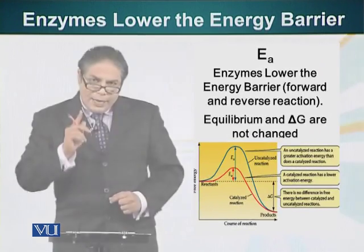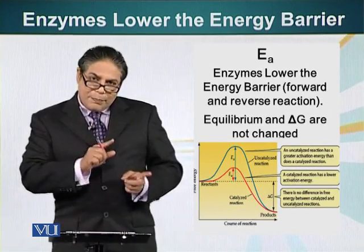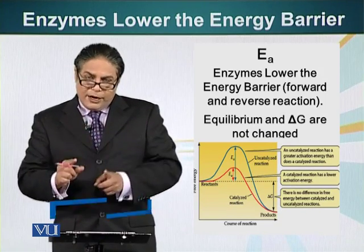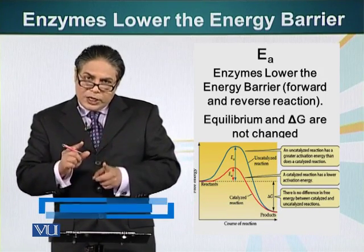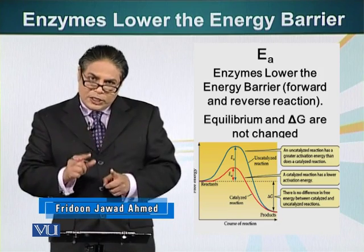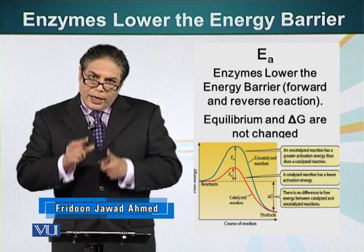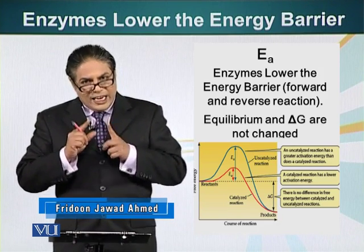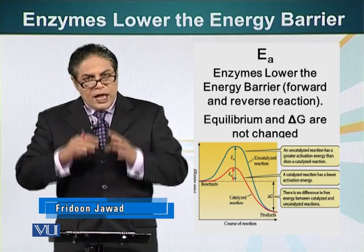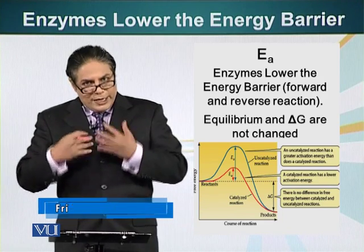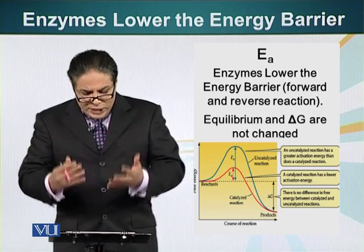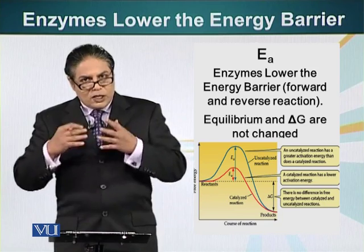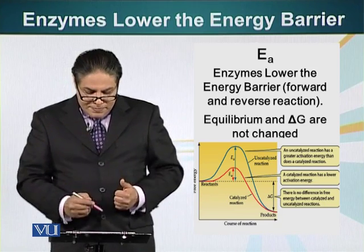However, equilibrium is dependent upon the delta G — the free energy. Enzymes cannot change the delta G or the equilibrium of a reaction. They can change the activation energy, and by changing the activation energy, they can speed up the rate of the reaction.